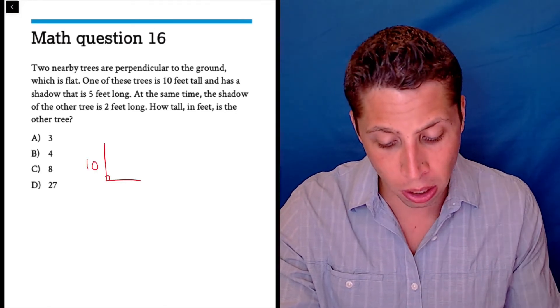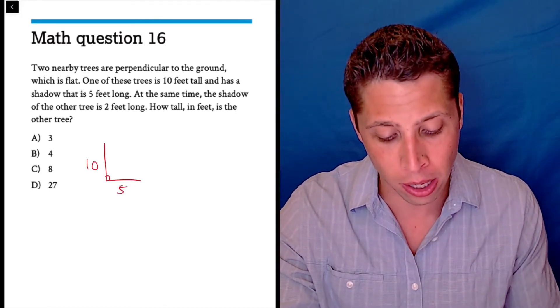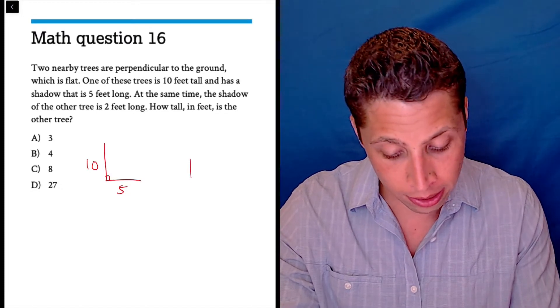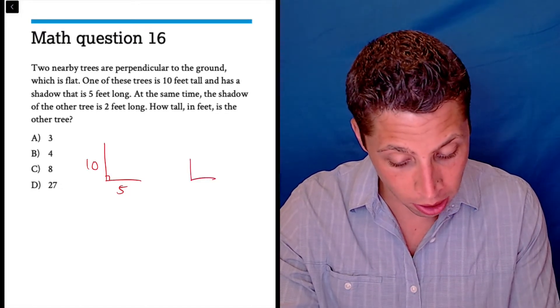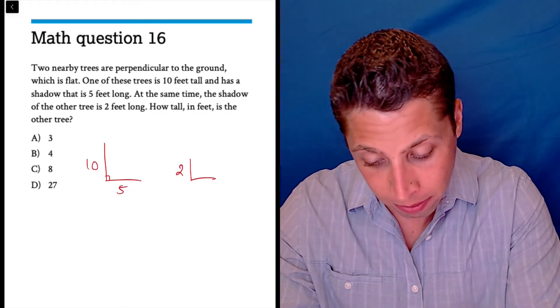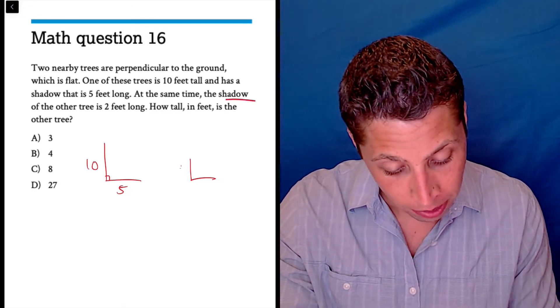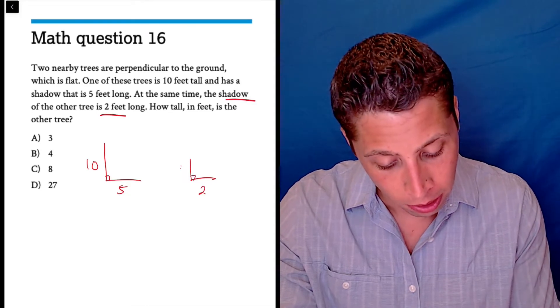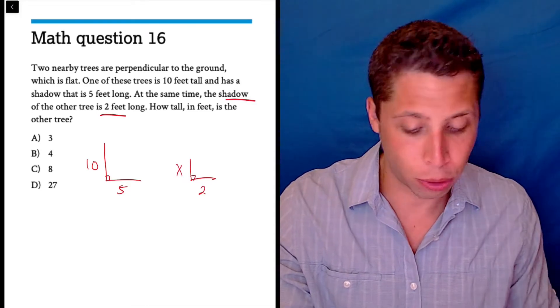One of these trees is 10 feet tall and has a shadow 5 feet long. The other is 2 feet long for the tree and we want to know—oh, nope, sorry, flipped it. See, you've got to be careful. The shadow is 2 feet long and we don't know the height of the tree. So there you go.